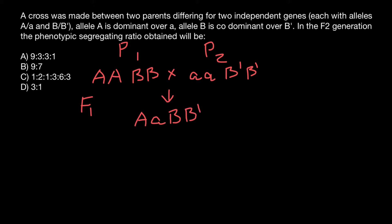To get the F2 generation, we just have to self-cross the F1 generation — cross it with the same genotype. We are going to get plenty of F1 generation plants or animals, but all of them are going to be of the same genotype. So if we self-pollinate or self-cross, both parents will have the same genotype, as you can see here.